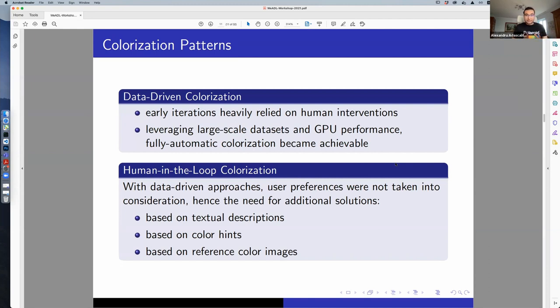We have patterns. Patterns are kind of a way of thinking when you want to approach this task. You need a mindset, then you can employ the deep learning algorithms as you want. These patterns are usually concerned about how you get your data. In the early iterations, people relied on human intervention to make colorization possible. They started to leverage large-scale datasets and the performance of newly invented GPUs to make the process fully automatic.